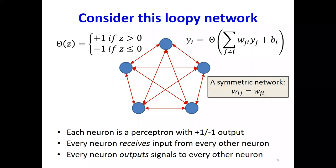We're going to focus on a particular kind of model where, for simplification, the weight with which neuron i gets information from neuron j is the same as the weight with which neuron j gets values from neuron i — so W_ij equals W_ji. These connections are symmetric.